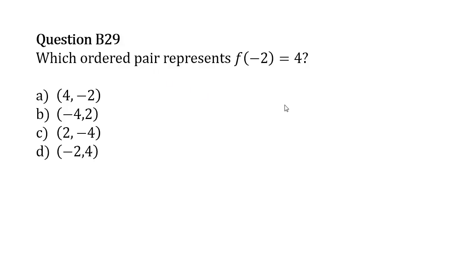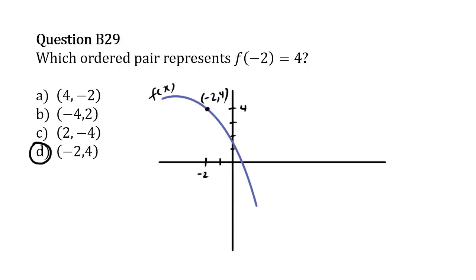The answer to this question is D. Which ordered pair represents f of negative 2 equals 4?